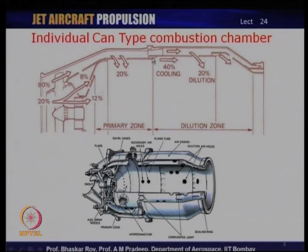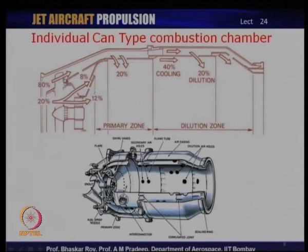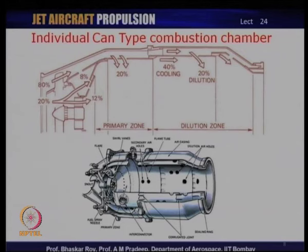In summary, air comes in and is split — a minor part participates in the combustion process, while the major part bypasses and comes in later for cooling. We will look at what happens in the combustion process in subsequent slides, but first let us take a look at the other kinds of combustion chambers used in modern gas turbine engines.